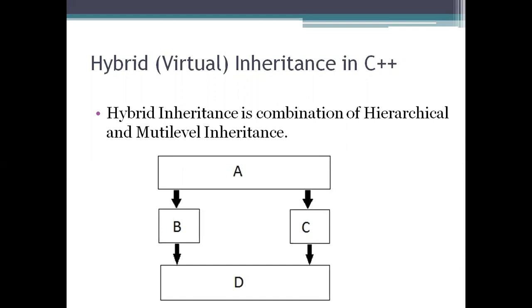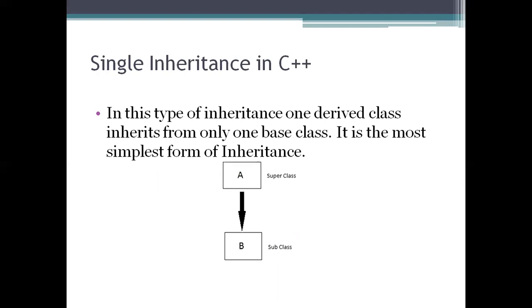Hybrid inheritance: this structure combines more than one type of inheritance. When multiple and multi-level are combined, we have hybrid inheritance. Here we have single inheritance at one level, then another inheritance becomes multi-level, and the combination of these creates hybrid inheritance.